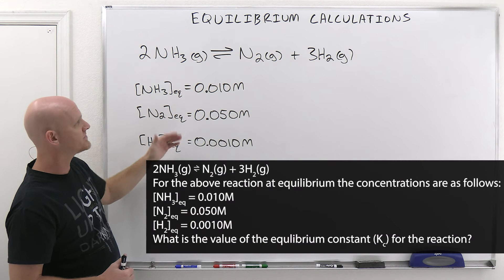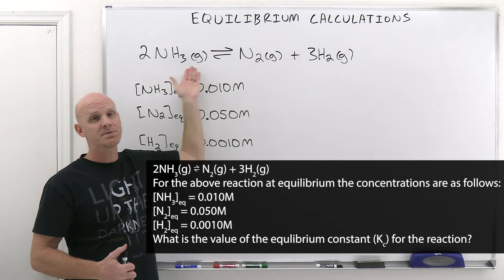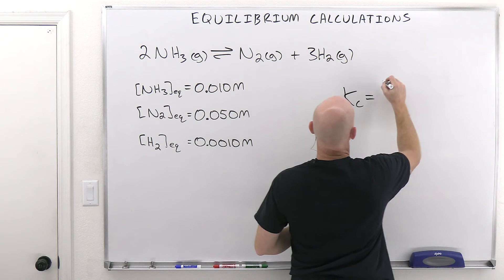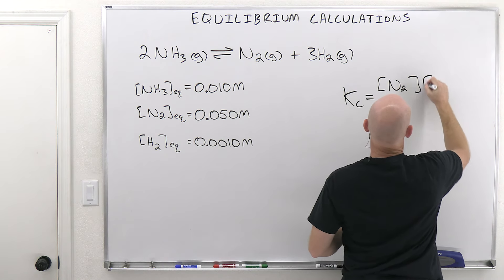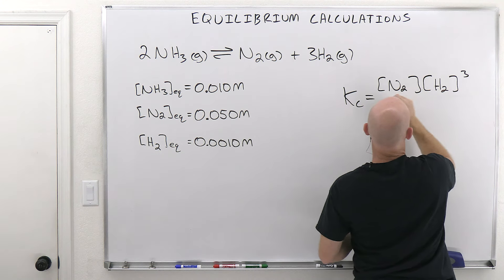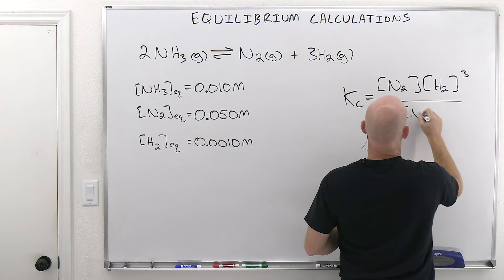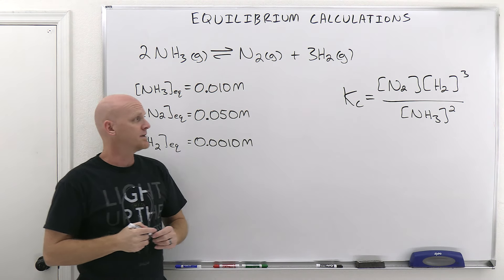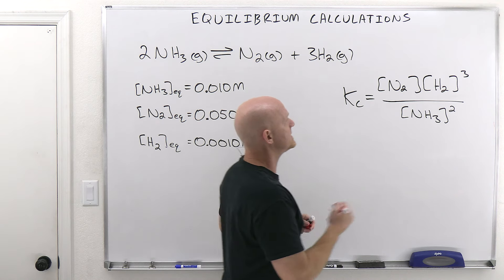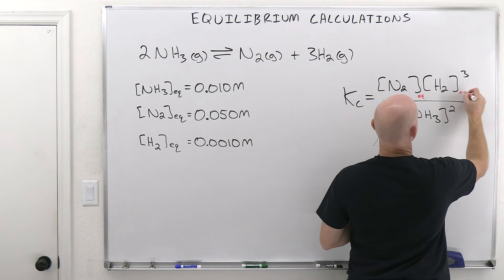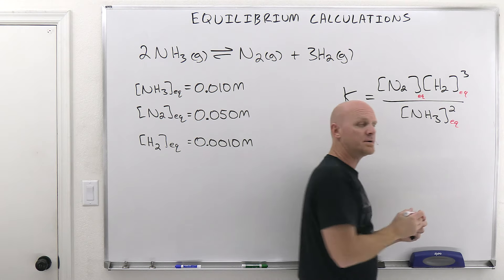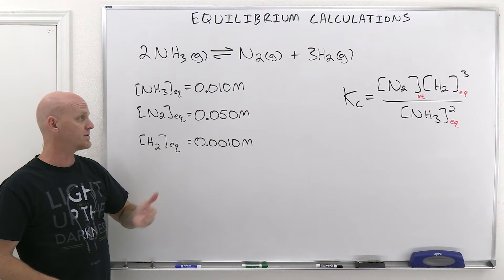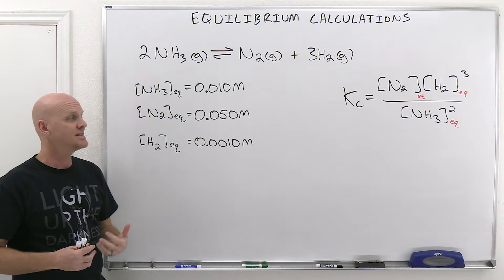In this case, we're given all three equilibrium concentrations for all three species showing up in this reaction, and then just asked to solve for Kc. So the first thing we do is set up the Kc expression, which in this case is the concentration of N2 times the concentration of H2 cubed, all over the concentration of NH3 squared. This is a typical setup. If this is Kc, it's implied that all of these concentrations have to be measured at equilibrium. That's exactly what's supplied here — all three at equilibrium. We just plug them in and solve for Kc.